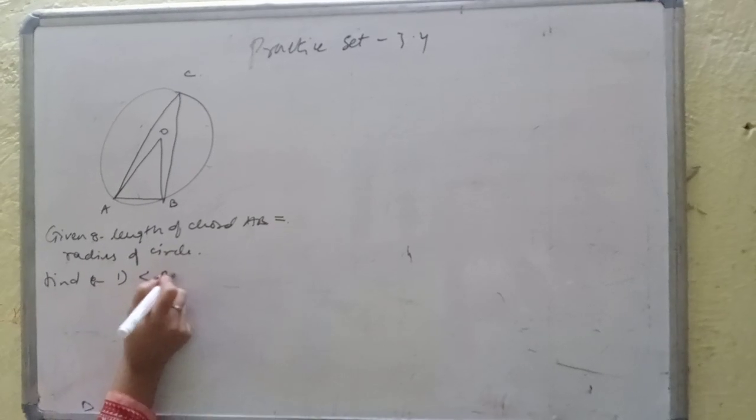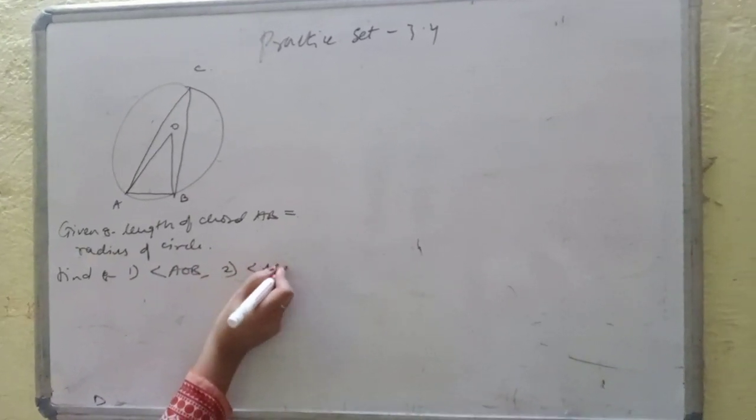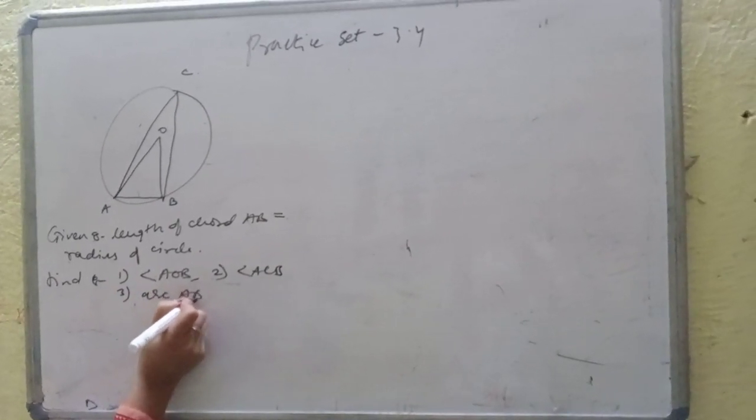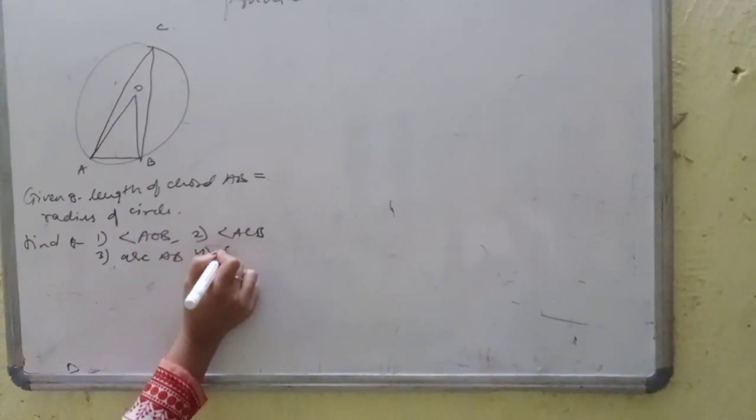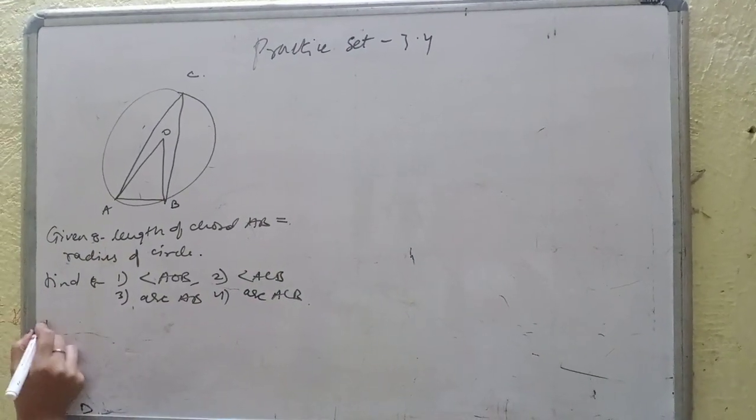What do we have to find? First, angle AOB. Second, angle ACB. Third, arc AB. And the last one, fourth, arc ACB. These three are finding out.